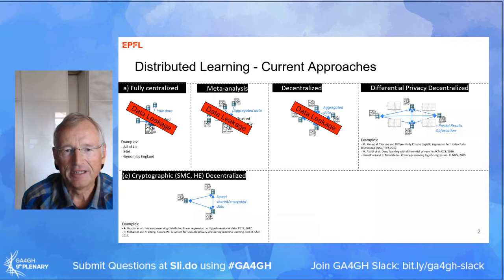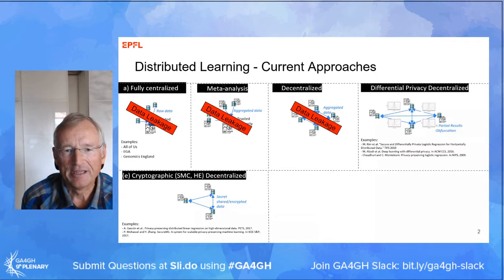Many of them have data leakage. Differential privacy deliberately introduces noise in some way, which is undesirable.